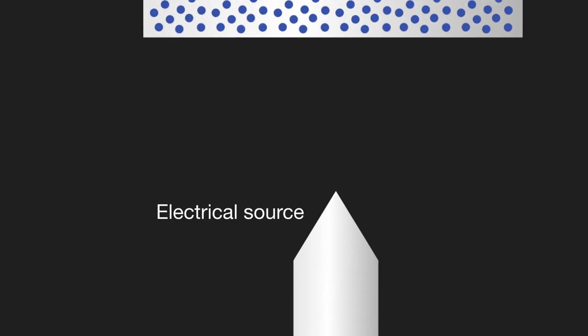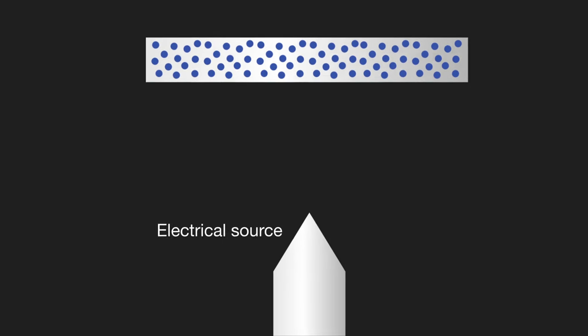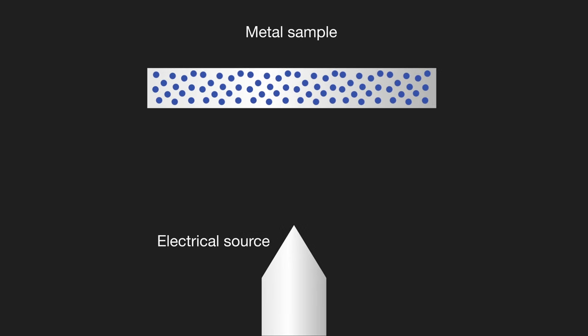All OES analyzers contain three major components. The first is an electrical source to excite atoms within a metallic sample, so that they emit characteristic light or optical emission lines. This requires a small part of the sample to be heated up to thousands of degrees Celsius.